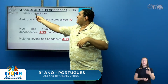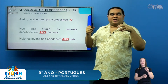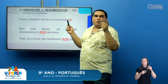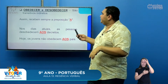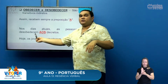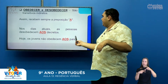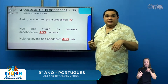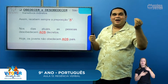Os verbos obedecer e desobedecer são transitivos indiretos — eles sempre vão receber um complemento, e antes do complemento sempre vai aparecer a preposição 'a', 'ao' ou 'aos'. Quem obedece, obedece a alguém; quem desobedece, desobedece a alguém. Por exemplo: 'Nos dias atuais, as pessoas desobedecem aos decretos' — aparece a preposição 'aos'. 'Os jovens não obedecem aos pais' — aparece a preposição 'aos'. Com obedecer e desobedecer, sempre utilizamos as preposições 'a', 'ao' ou 'aos'.